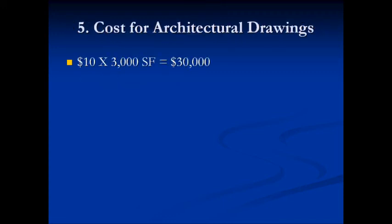And finally, we multiply. We look at the cost for architectural drawings as being the $10 we arrived at multiplied by the area, which is 3,000 square feet. And we end up with $30,000. So that's the total estimated cost for architectural drawings based on the construction cost per square foot method.